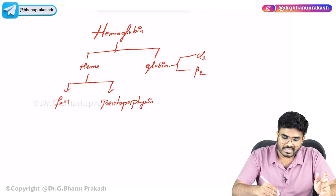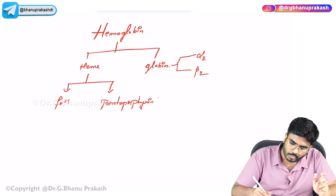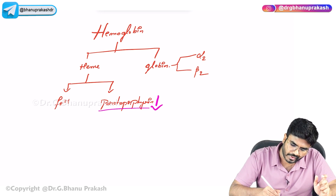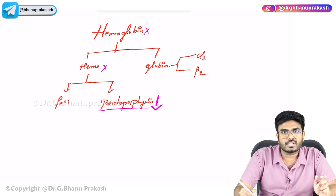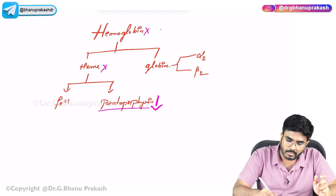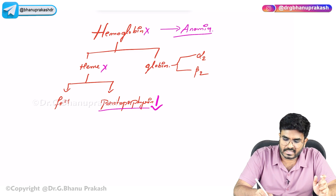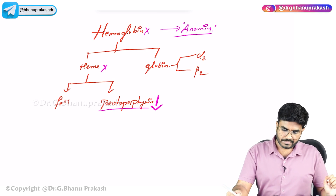In sideroblastic anemia, protoporphyrin is not being properly produced. Without protoporphyrin, there is no heme; without heme, hemoglobin is not formed; without hemoglobin, the patient has anemia — defined as hemoglobin less than 13.5 g/dL in males or less than 12.5 g/dL in females.